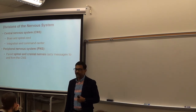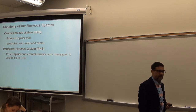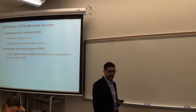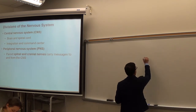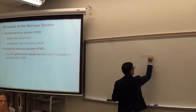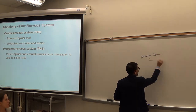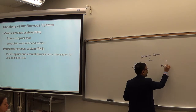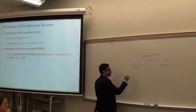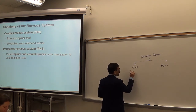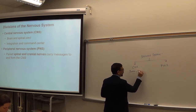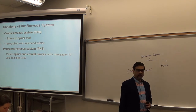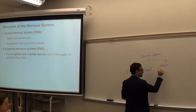Divisions of the nervous system: we divide the nervous system into two parts — the central nervous system, or CNS, and the peripheral nervous system, or PNS. The central nervous system consists of two organs: the brain and the spinal cord. The peripheral nervous system consists of nerves.